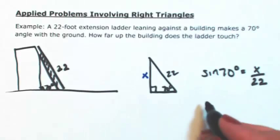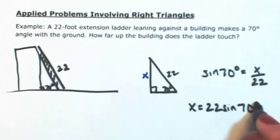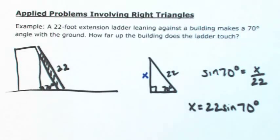So then solving for x, multiply both sides by 22. And then this was a 22-foot extension ladder. So this is in feet.